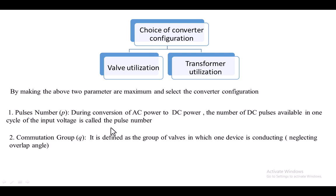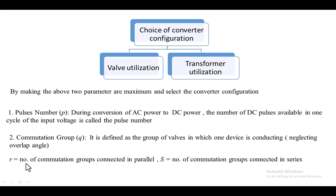We will first predefine the key variables. The pulse number: in an HVDC system, we are converting AC power into DC power, so the DC voltage consists of some number of pulses. How many pulses occur per one cycle of AC voltage is the pulse number. The second variable is the commutation group, which is a group of devices in which only one device is conducting, neglecting the overlap angle.